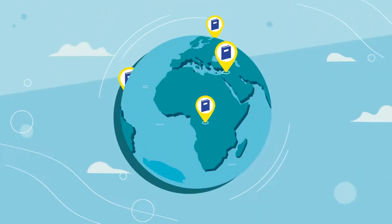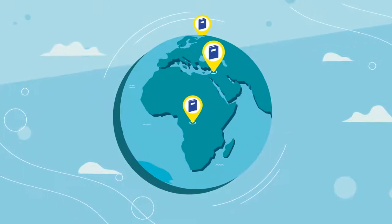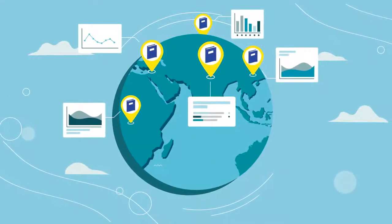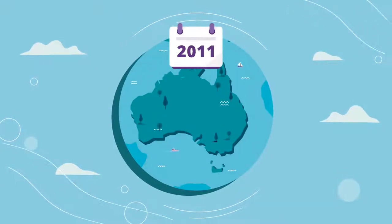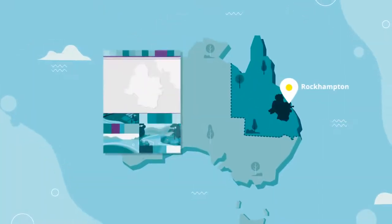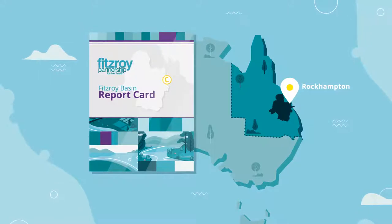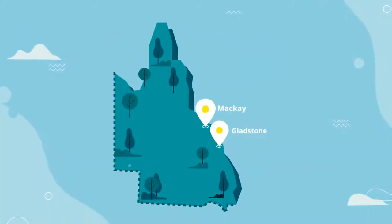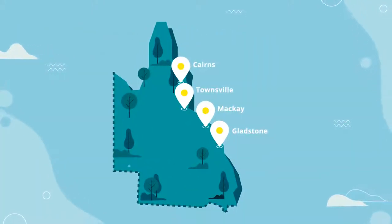River Health Report Cards are being used all over the world to assess and monitor the ongoing health of waterways. Fitzroy Partnership for River Health developed Queensland's first Regional Report Card from 2011, and more recently other Report Cards up and down the coast have also been developed.